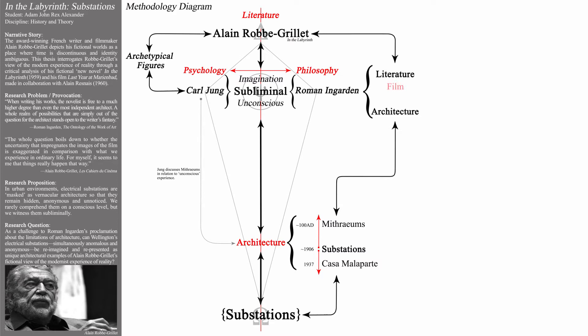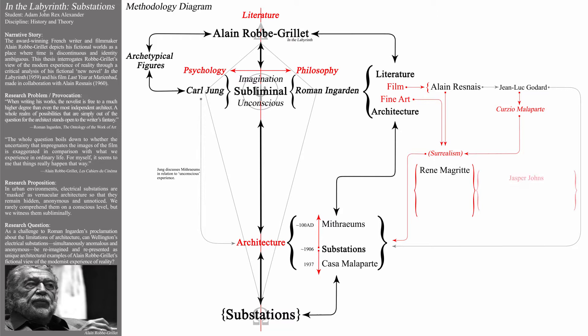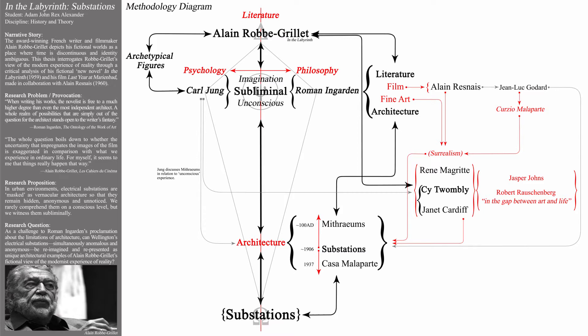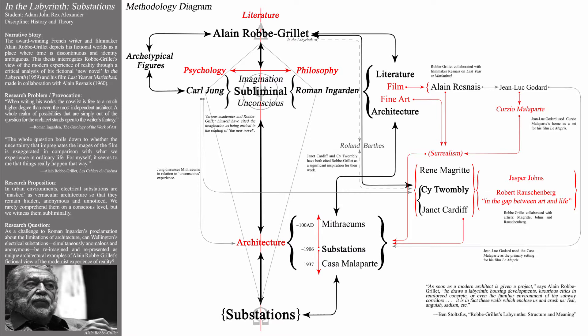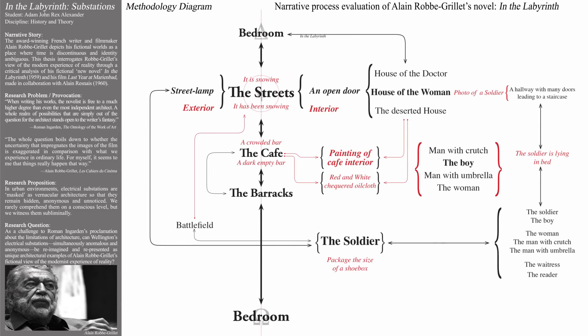Adam discovered that the disciplines of film and fine art also played important roles in his findings. Roque-Grié collaborated extensively with filmmakers Alan Resnay and Jean-Luc Godard. He also collaborated extensively with artists René Magritte, Jasper Johns, and Robert Rauschenberg. In turn, artists Cy Twombly and Janet Cardiff were strongly influenced by the writings of Alan Roque-Grié. Throughout the evolving methodology diagram, Adam continually added notes to explain the relationships between these different disciplines.